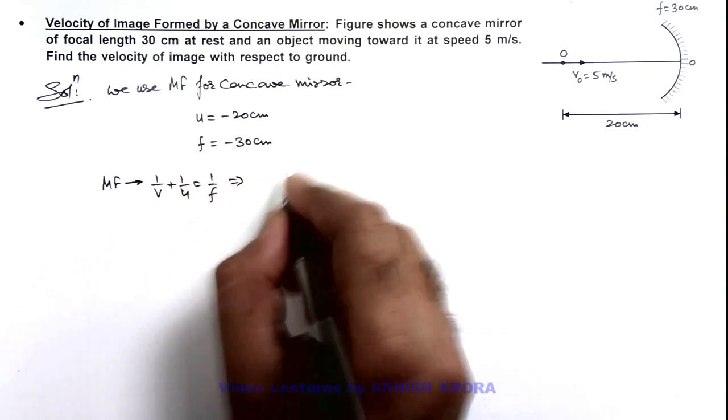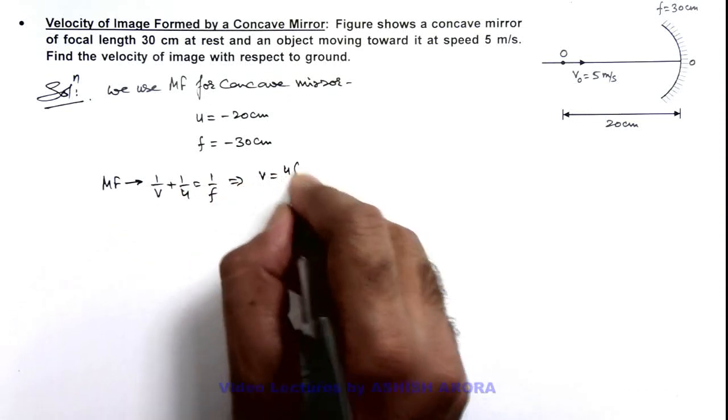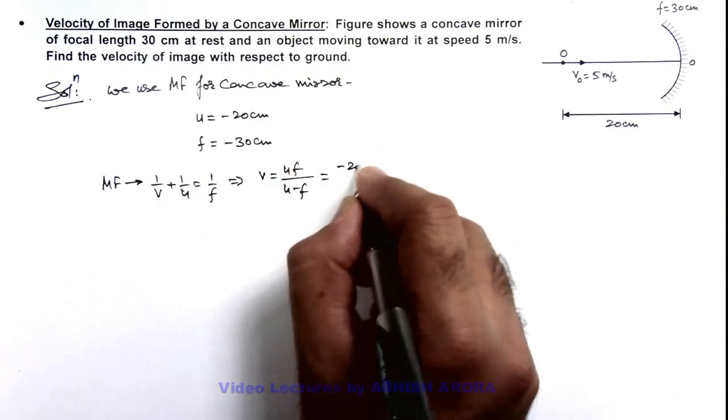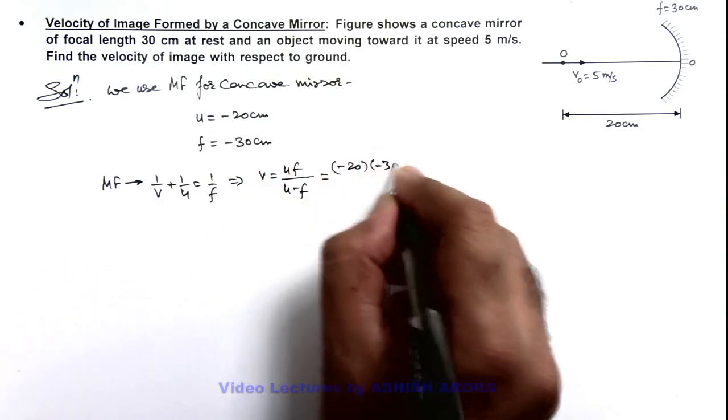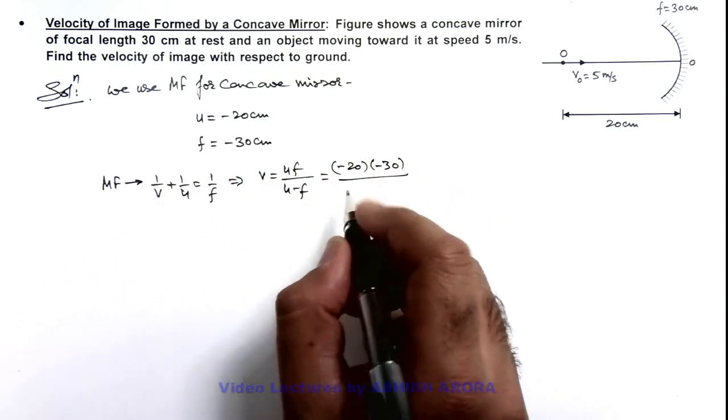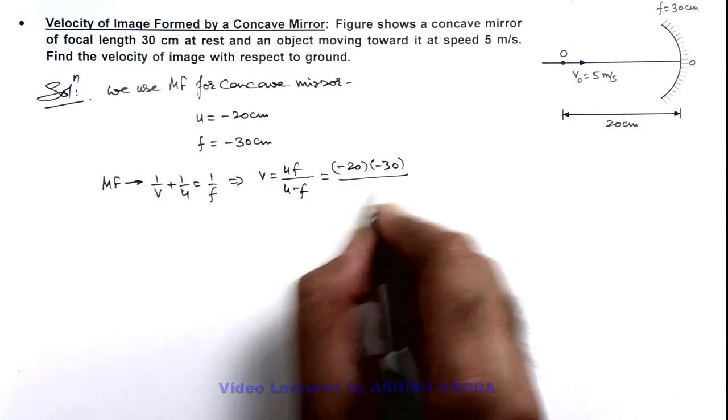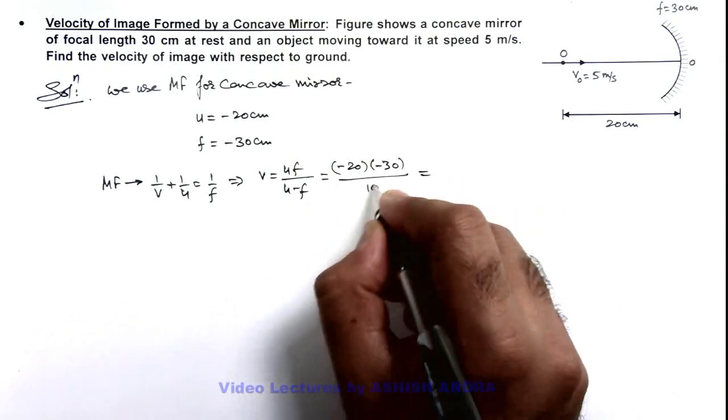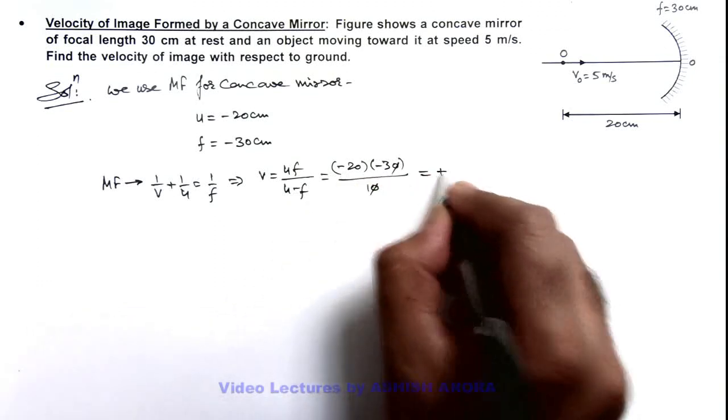This implies the value of v we can write as u f by u minus f, so this is minus 20 multiplied by minus 30 divided by minus 20 plus 30, so this will be 10. And on calculation this will give us plus 60 centimeter.